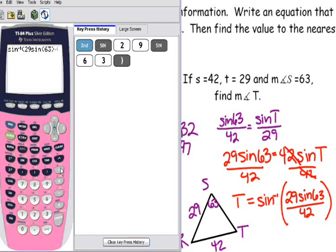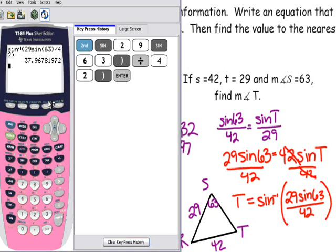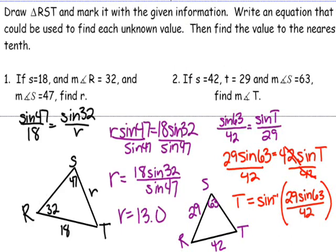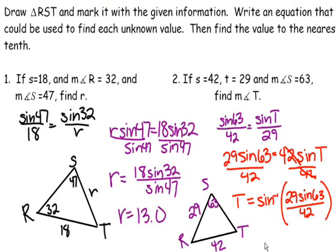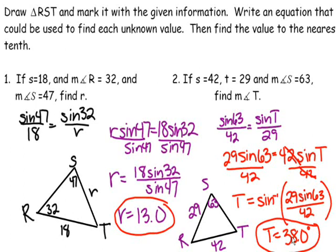Close the parentheses and hit enter. The result is 37.96 degrees. Rounded to the nearest tenth, T ≈ 38.0 degrees — be sure to include the degree marking. That's how you use law of sines: in the first example we found a side, and in this one we found an angle. Just set up the proportion and solve for the missing piece. Always draw the triangle first so you can see what you're dealing with.